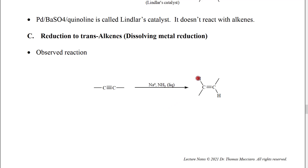In this case, this reduction occurs by a completely different mechanism that we're not going to cover at this time. Essentially, the electrons from the sodium go into the alkyne, the alkyne becomes a very strong base, and it grabs hydrogen from the ammonia. Because of the way the mechanism works, we end up with primarily the trans alkene. So this is complementary to Lindlar's catalyst, which gives us the cis alkene.